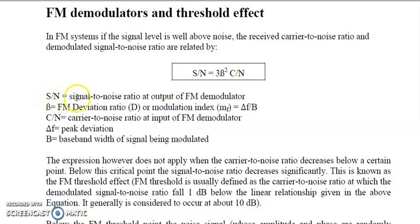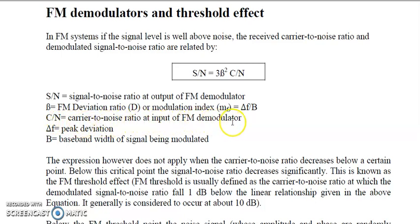Here, S/N is the signal-to-noise ratio at the output of the FM demodulator. Beta is either the FM deviation ratio or the modulation index. We use modulation index M_F for a baseband signal with a single modulating frequency, and if there are many modulating signals together, beta is the FM deviation ratio.